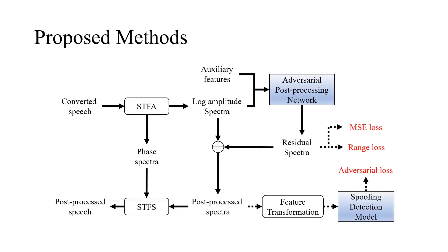The framework of our proposed method is shown in the figure. The log-amplitude spectra extracted from the converted speech by Short-Time Fourier analysis, together with auxiliary features, are adopted as the inputs of APN. Residue spectra are predicted by APN and added to the input spectra to obtain the post-processed spectra. With the phase spectra of the original converted speech, the post-processed speech is generated by Short-Time Fourier synthesis.